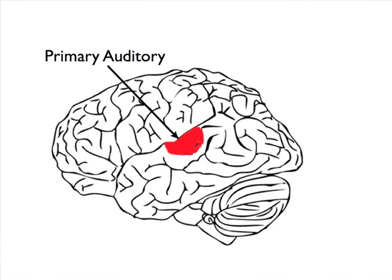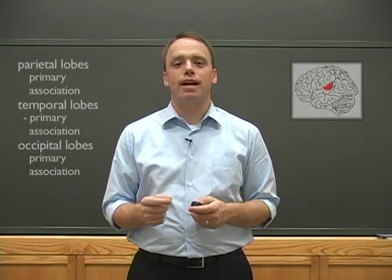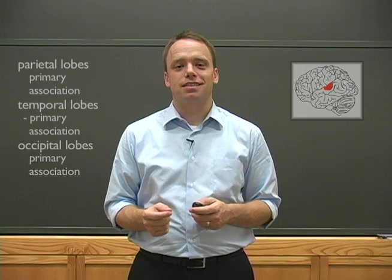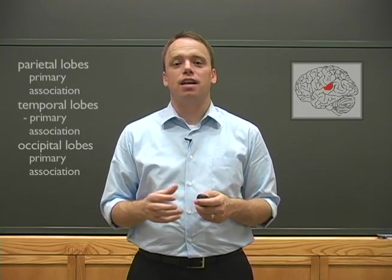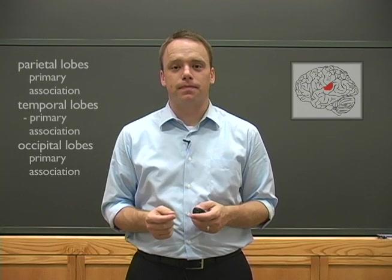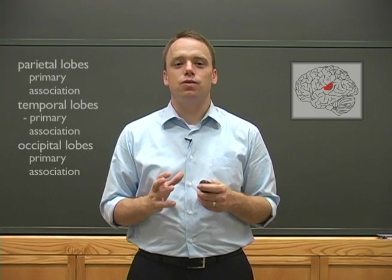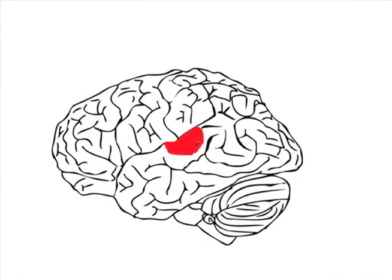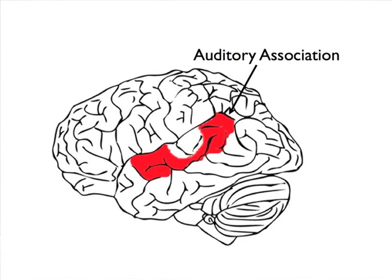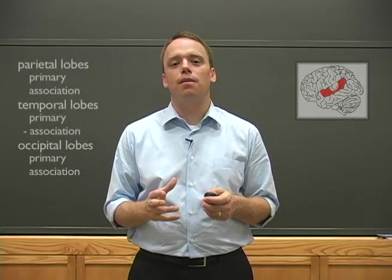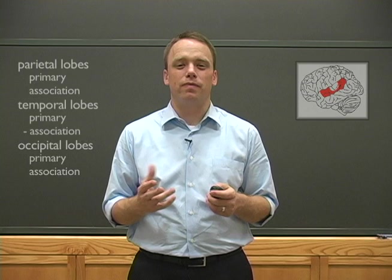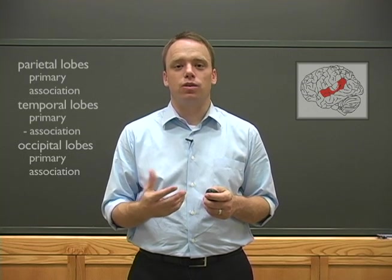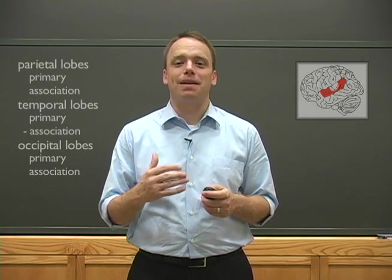Just like the other sensory lobes, the primary auditory cortex contains a direct mapping of the sensory information that it processes. In this case, we call it a tonotopic map, in that it represents a frequency map that corresponds directly to the information on the cochlea. The major function of the primary auditory cortex is to decode very basic auditory information such as volume and frequency. Surrounding it is the auditory association area, which in reality can be broken down into several subdivisions, but we'll treat it as one functional unit. These areas deal with more complex processing, from understanding the temporal order of sound — very important for speech — all the way up to making meaning out of language.